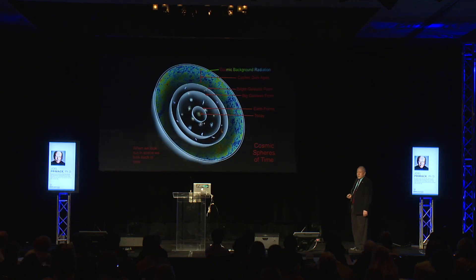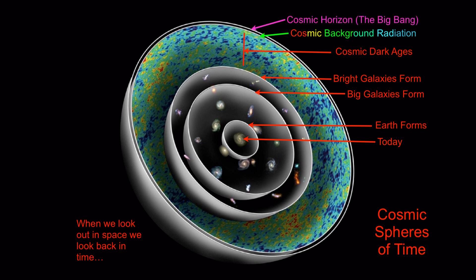Then there's, of course, the colorful microwave background radiation — the heat radiation of the Big Bang — and the cosmic horizon beyond which we cannot see even in principle. This is the unknowable part.